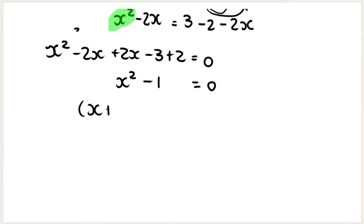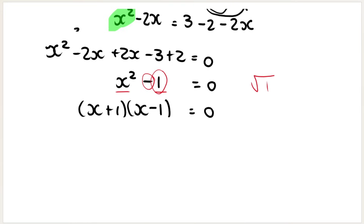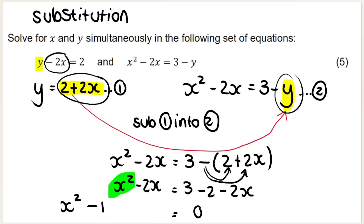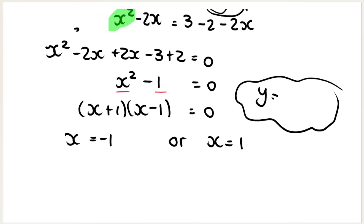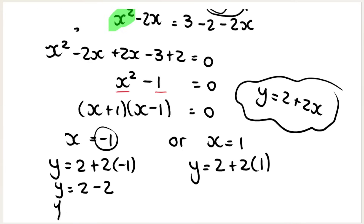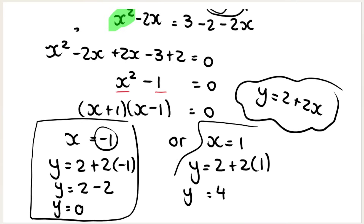Factorize: this is the difference of two squares — x plus 1 times x minus 1. So x equals negative 1 or x equals positive 1. Since we're solving simultaneously there are two solutions for y. Using y equals 2 plus 2x: when x equals negative 1, y equals 2 minus 2 equals 0. When x equals positive 1, y equals 2 plus 2 equals 4. So the solutions are: x equals negative 1 and y equals 0, or x equals 1 and y equals 4.